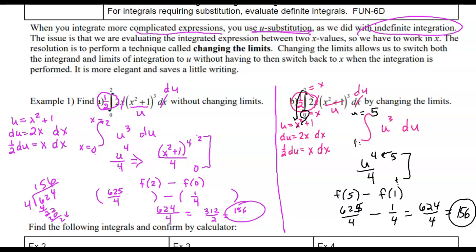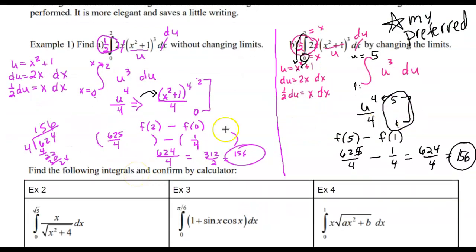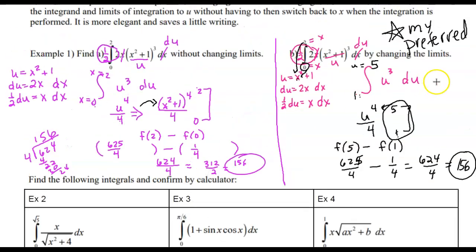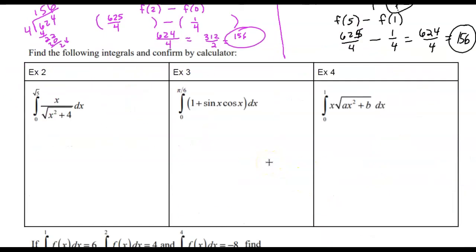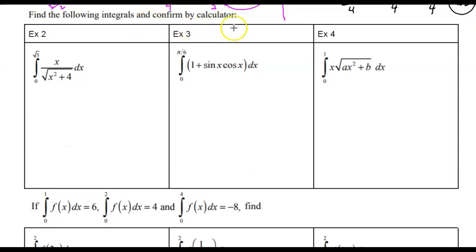There's only one slight difference: do you want to keep everything in terms of u, or plug everything back in? Plugging back in can make it look harder and sometimes introduces more errors. My preferred method is changing the limits to u-limits because it makes the substitution process simpler, reduces student errors, and all the notation matches. You're welcome to do whichever you prefer — as long as you show your work, I can find your error. You're also welcome to confirm these on the calculator using the graph and the second calculate integral feature, number 7.